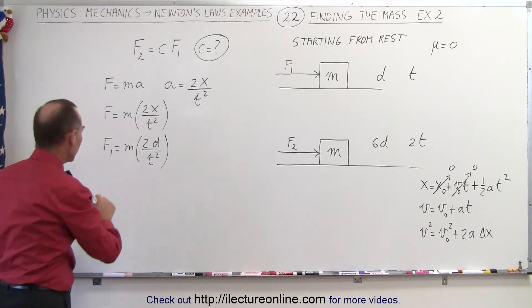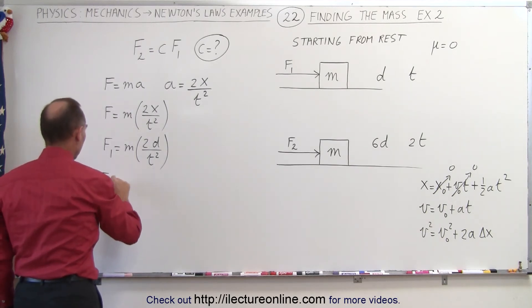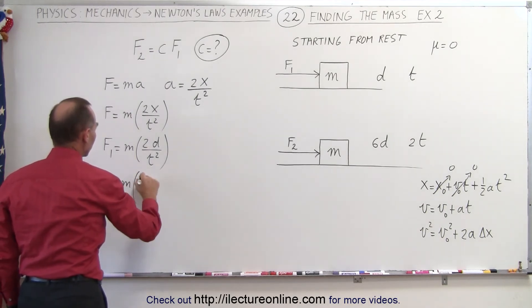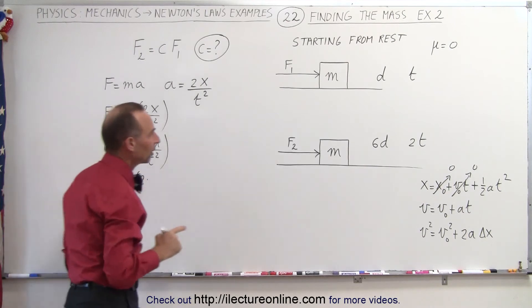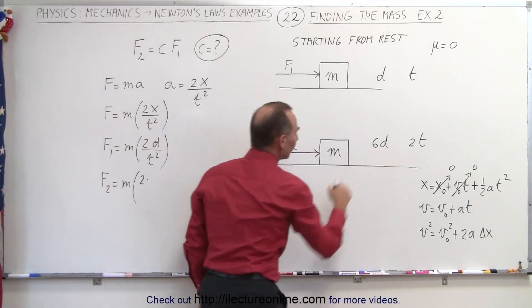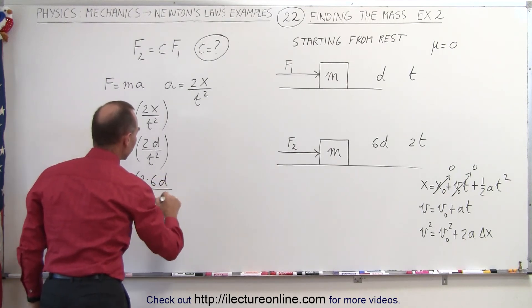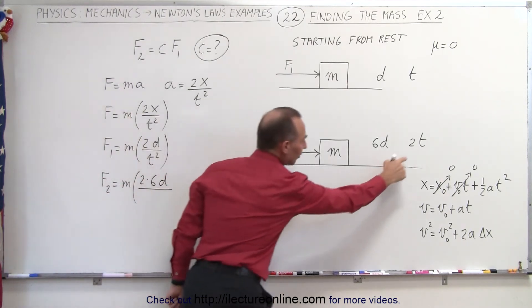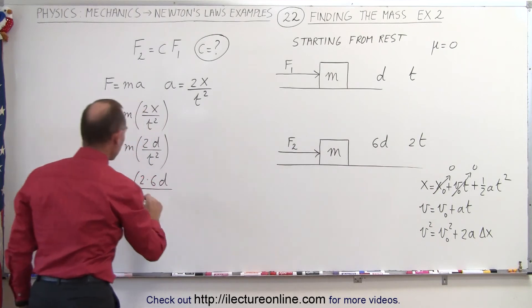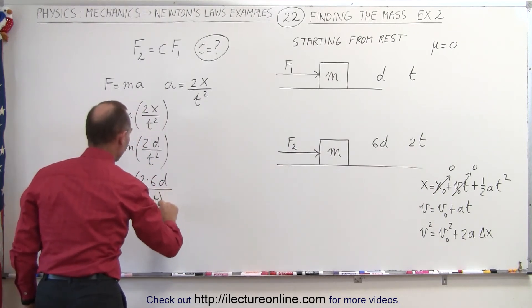Now for f2 we still have the same mass, so now it's two times the distance covered, and the distance covered is 6d, so 6d divided by the time squared. In this case the time is 2t, so it'll be 2t quantity squared.